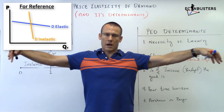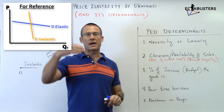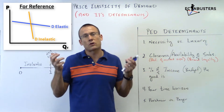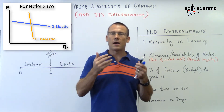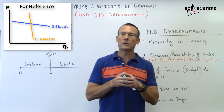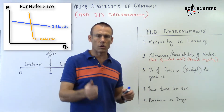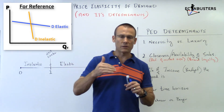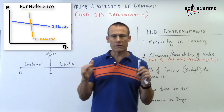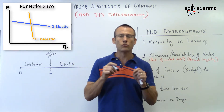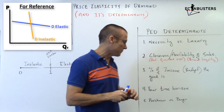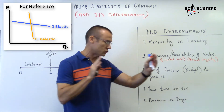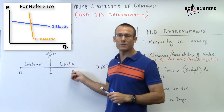The fifth determinant is your time horizon. The greater your time horizon, the more responsive you will be. If the price of gasoline goes up tomorrow, you'll still buy close to the same amount. But over a year or two years, you'll become far more responsive — you'll move closer to work, buy a more fuel-efficient car, use mass transit. Short time horizon means inelastic; longer time horizon means more elastic.